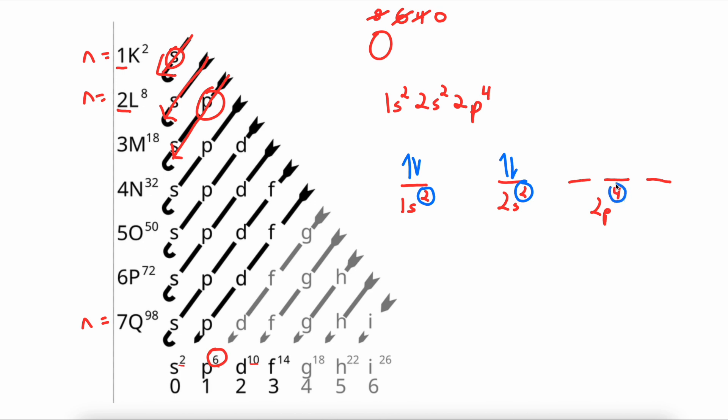This P sublevel has 4 electrons in it. So we will go 1, 2, 3, 4. Notice how I filled 1 electron per orbital before doubling up. And when I did double up, I again gave them opposite spins.